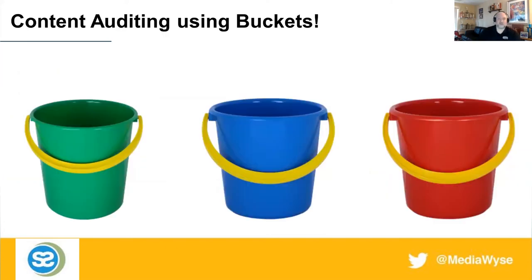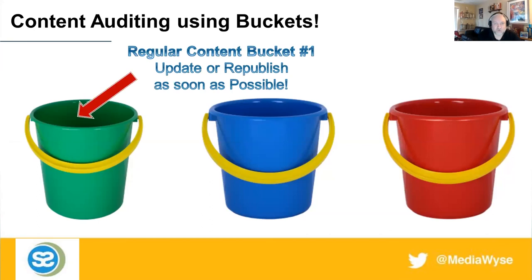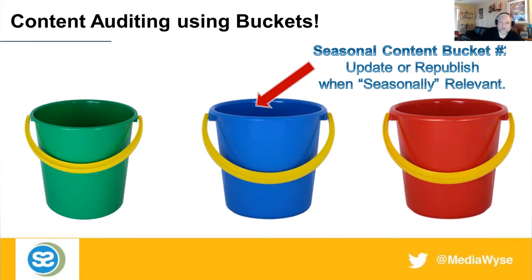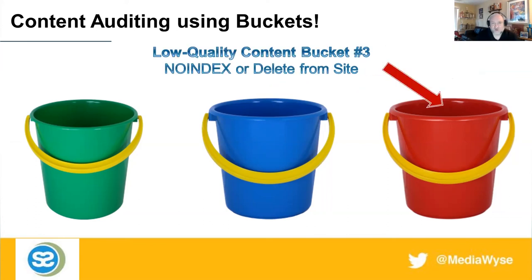Let's talk about content auditing using buckets. Bucket one is content we want to update or republish as soon as possible. Bucket two is seasonal content — update or republish when seasonally relevant. Right now we're in the fall, harvest season — anything Halloween-related, fall-related, pumpkin, or coming up on the holidays is content we'd be looking to update and republish right now. Bucket three is low-quality content — content that's not doing anything for us, no clicks, no positive signals. We no-index content or we delete it.